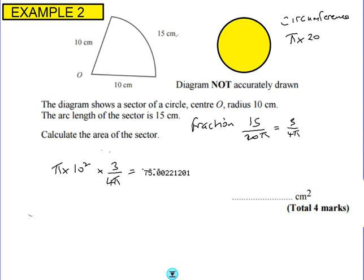It doesn't state an accuracy here. So generally, if it doesn't say, we'll do 3 significant figures. So let's go for 75.0 centimeters squared.